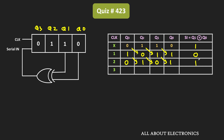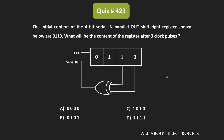So this 1 will be the serial input to the shift register. At the next clock edge, the content of Q3 becomes 1, and the remaining 3 bits get right shifted. So 0 shifts over, and 1 and 0 shift into the next places. That means after 3 clock pulses, the content of the register is equal to 1010. So for this question, option C is the correct answer.